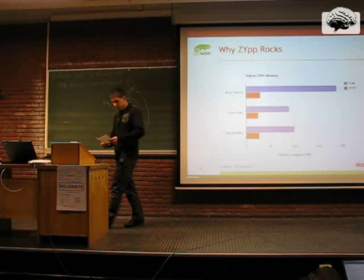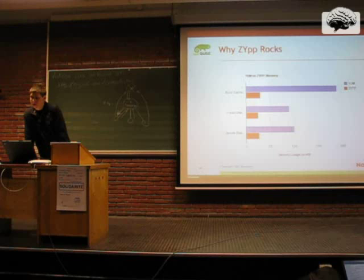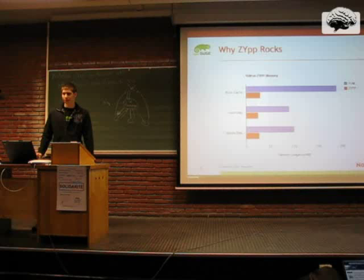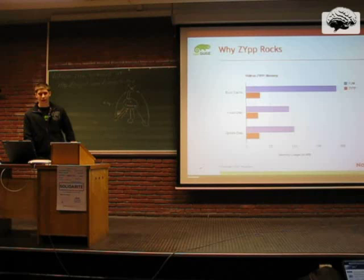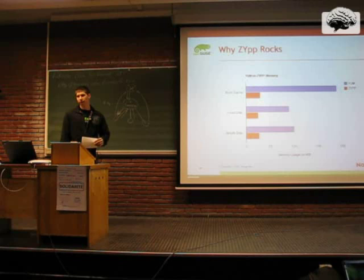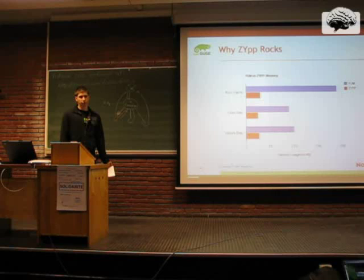Question from the audience: Isn't this just caused by ZYpp using the SAT solver and YUM not? Yes. Why not just put the SAT solver into YUM? Well, you could do that — but it's already done here. Online distribution upgrades are also possible: you can upgrade your distribution by simply typing zypper dup and you don't have to reboot to install packages. You only have to reboot to use the new kernel, and only once. We also use test cases so we can always be sure we don't break anything when committing code.